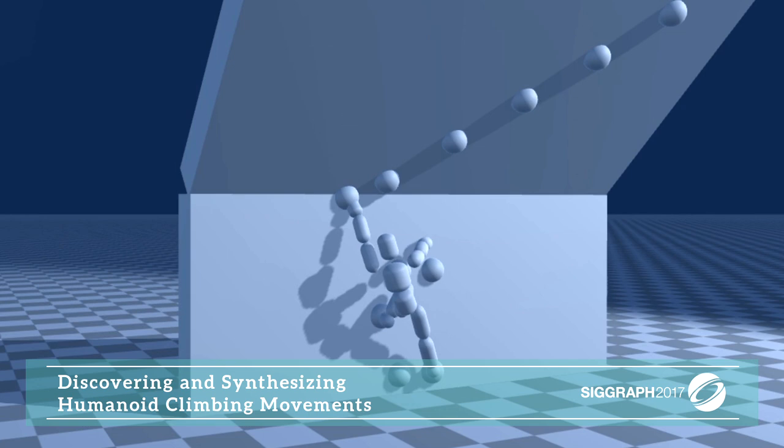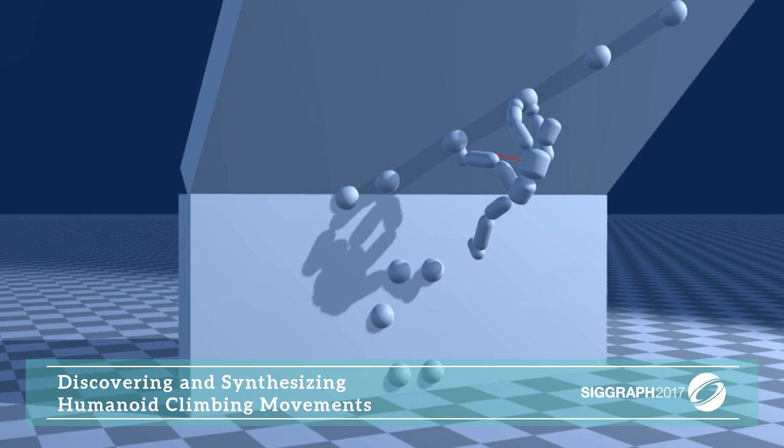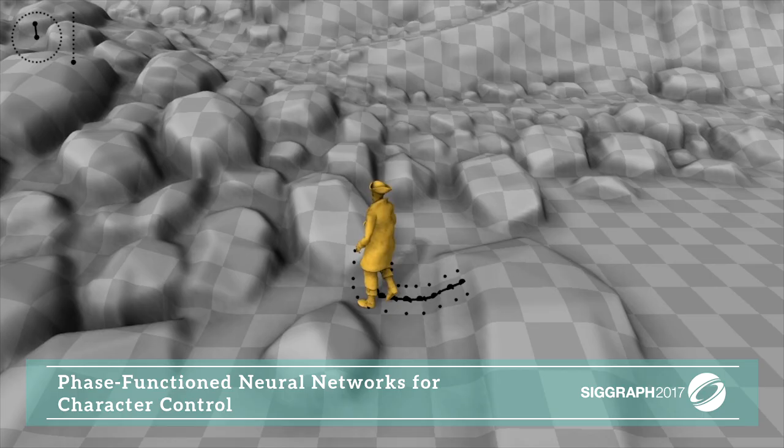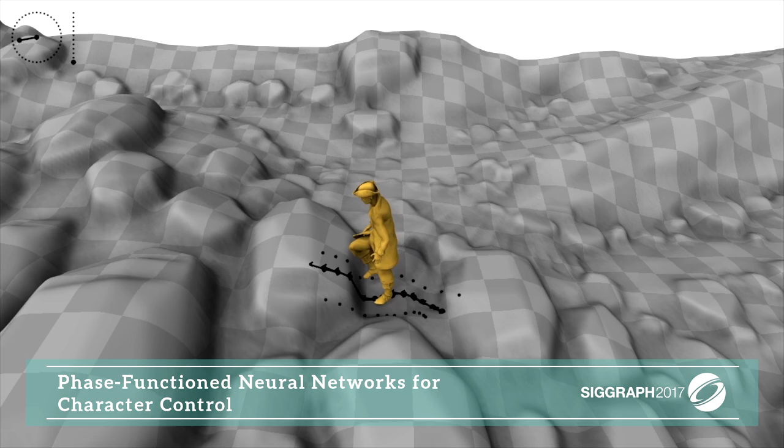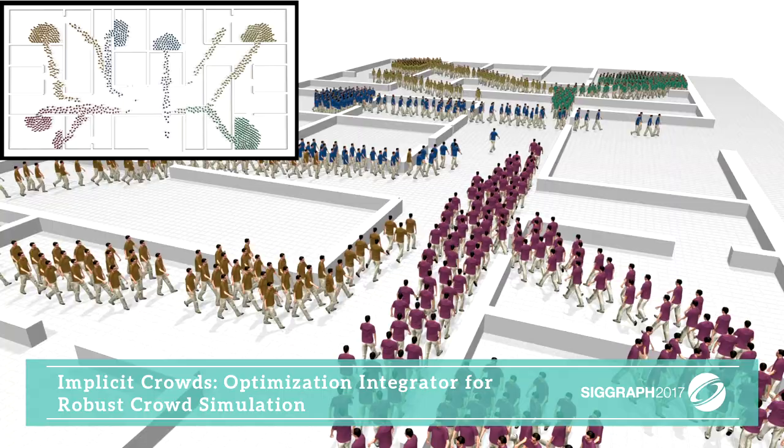A new method for planning both path and movement allows humanoids to climb difficult obstacles like this overhang. This new control mechanism allows a character to traverse rough terrain, adapting to direction changes in real time.